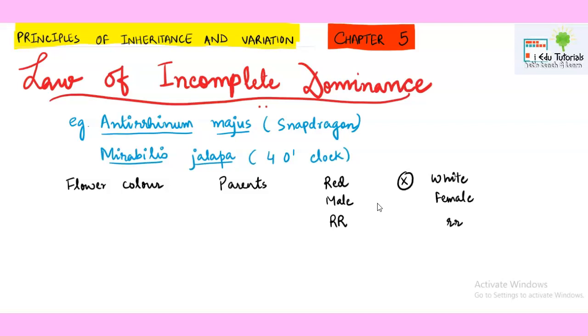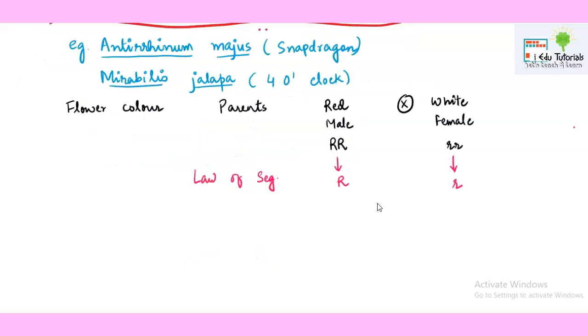Of course after this law of segregation will happen and this will result in the formation of gametes. So out of these two capital R's only one will come, out of these two small r's only one r will come. Now as these gametes they are going to fuse, they will produce the F1 generation and F1 generation genotype would be capital R small r. Now here the difference will come and that difference is going to be important.